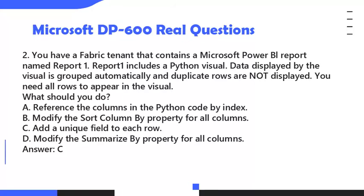Question 2. You have a Fabric tenant that contains a Microsoft Power BI report named Report 1. Report 1 includes a Python visual. Data displayed by the visual is grouped automatically and duplicate rows are not displayed. You need all rows to appear in the visual. What should you do? A. Reference the columns in the Python code by index. B. Modify the sort column by property for all columns. C. Add a unique field to each row. D. Modify the summarize by property for all columns. Answer: C.